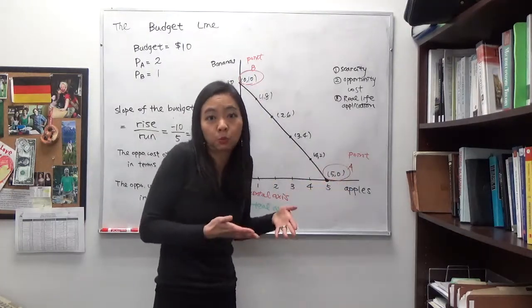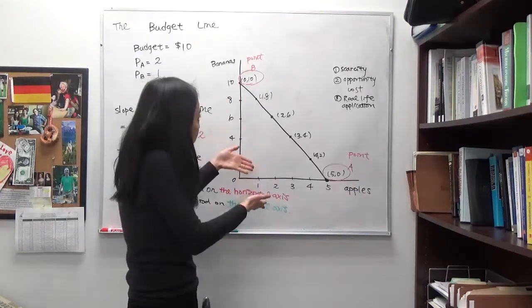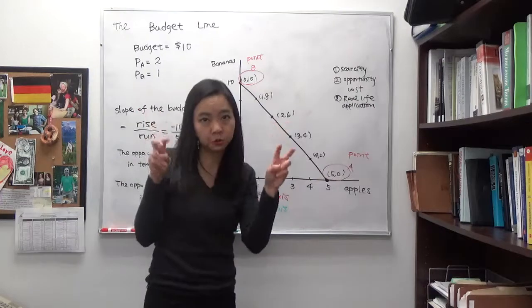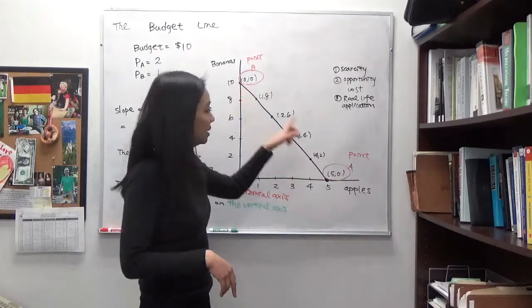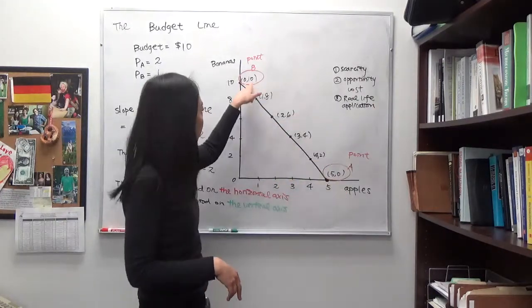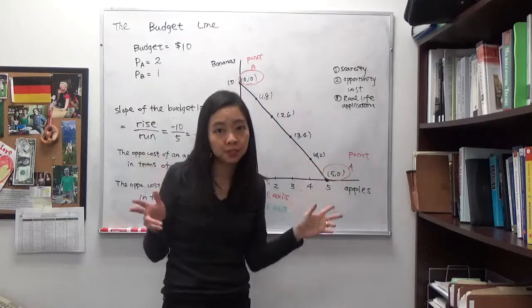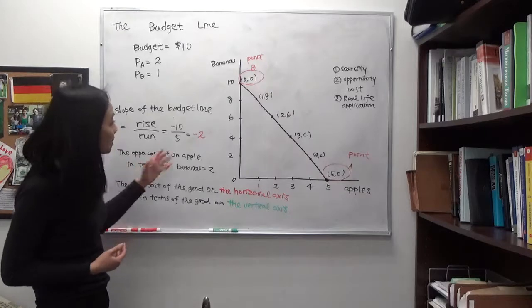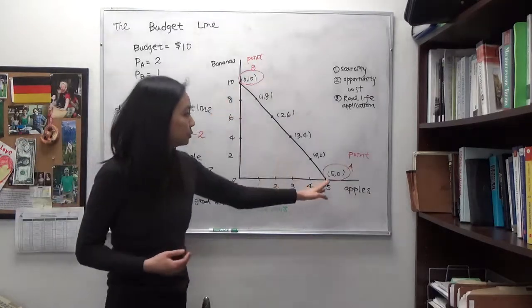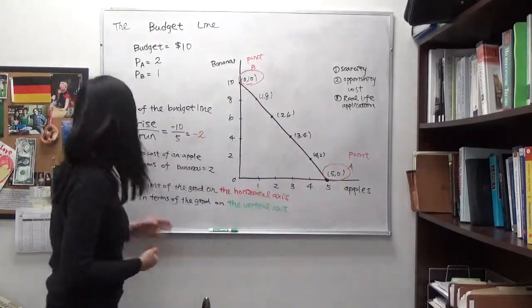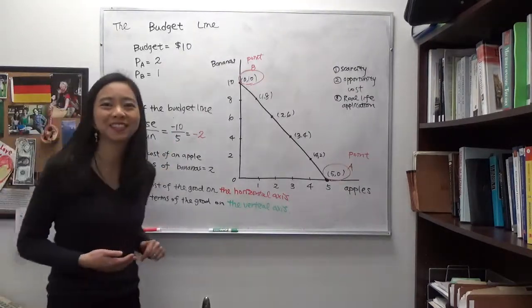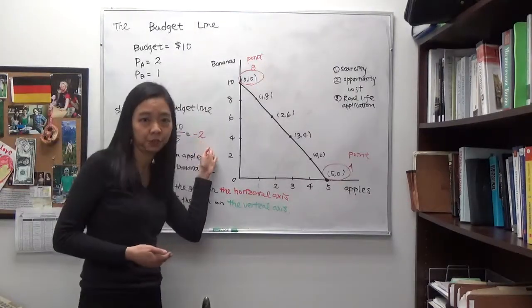So what is the rise? You're going from 10 to 0. So your rise is actually negative 10 because you're moving from 10 to 0. You're losing 10. So your rise is negative 10. And your run will be from 0 to 5. Therefore your run is positive 5. And therefore the slope of your budget line will be negative 2.